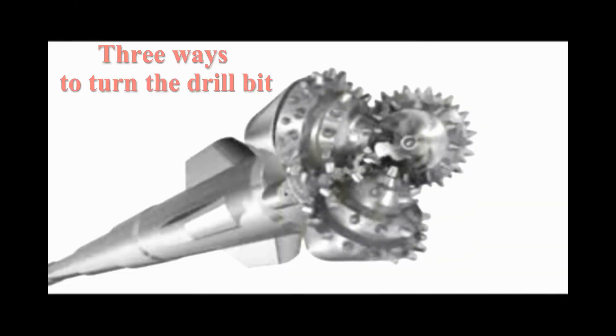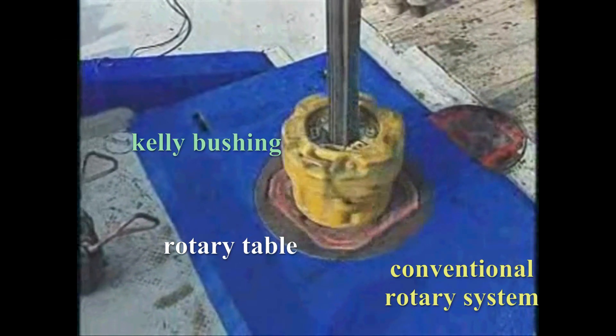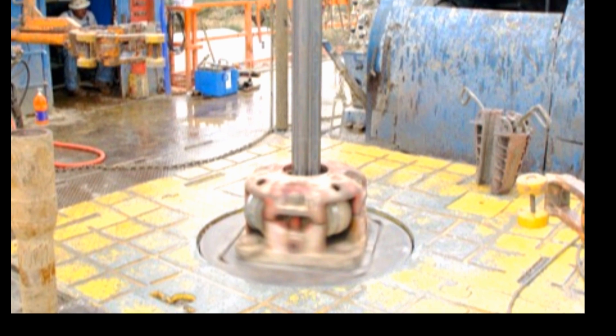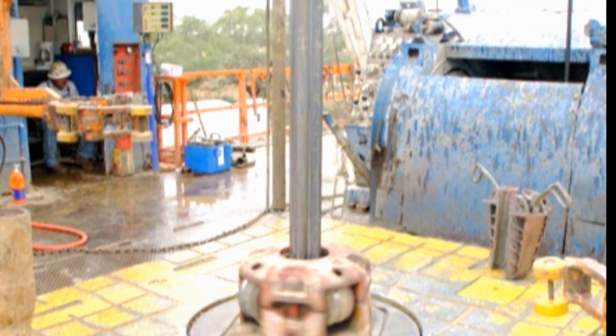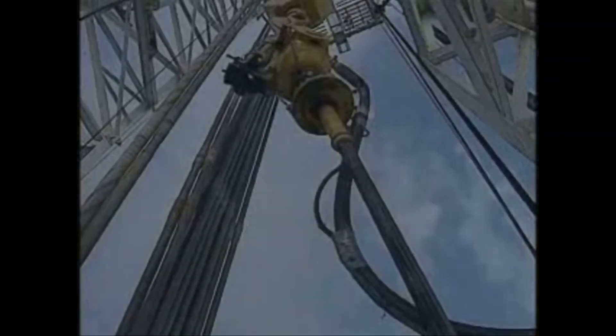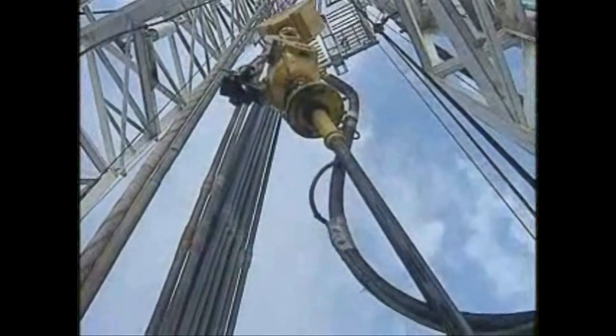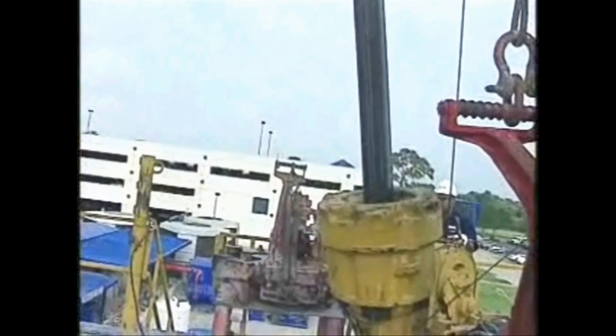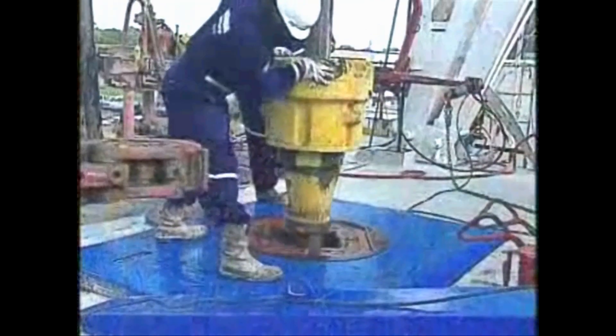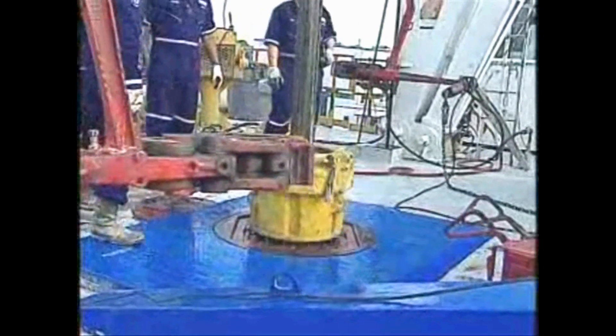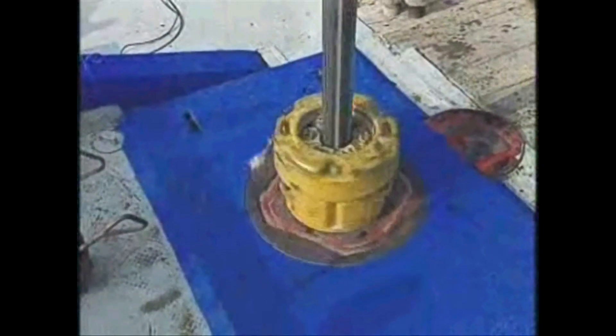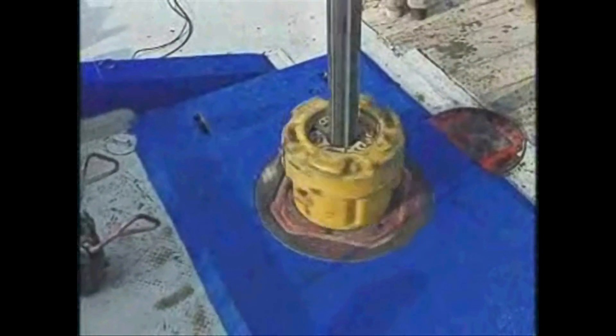What causes the drill bit to turn? There are three ways to turn the drill bit. The first is the conventional rotating system using the rotary table, the kelly bushing, and kelly. The kelly is a square or hexagonal opening in the kelly bushing which fits into the rotary table. As the rotary table moves, the kelly and the kelly bushing also rotate, thus turning the drill stem and bit below.